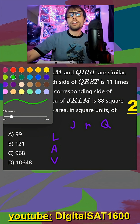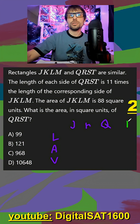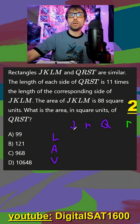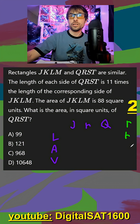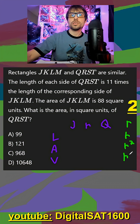Your ratio number is what we multiply your smaller shape by to get to your bigger shape. For lengths, you just multiply by your ratio number. For areas, you multiply by your ratio number squared. And for volumes, you multiply by your ratio number raised to the third.